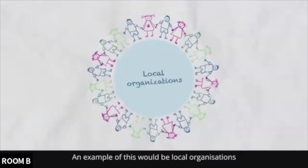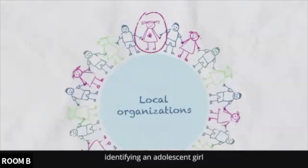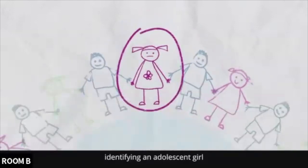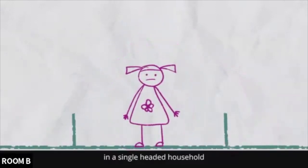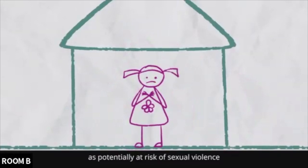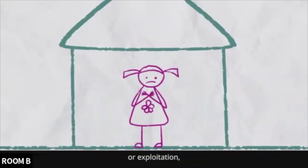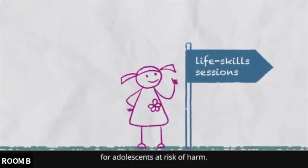An example of this would be local organisations identifying an adolescent girl with a form of disability in a single-headed household as potentially at risk of sexual violence or exploitation, and referring her to life skills sessions for adolescents at risk of harm.